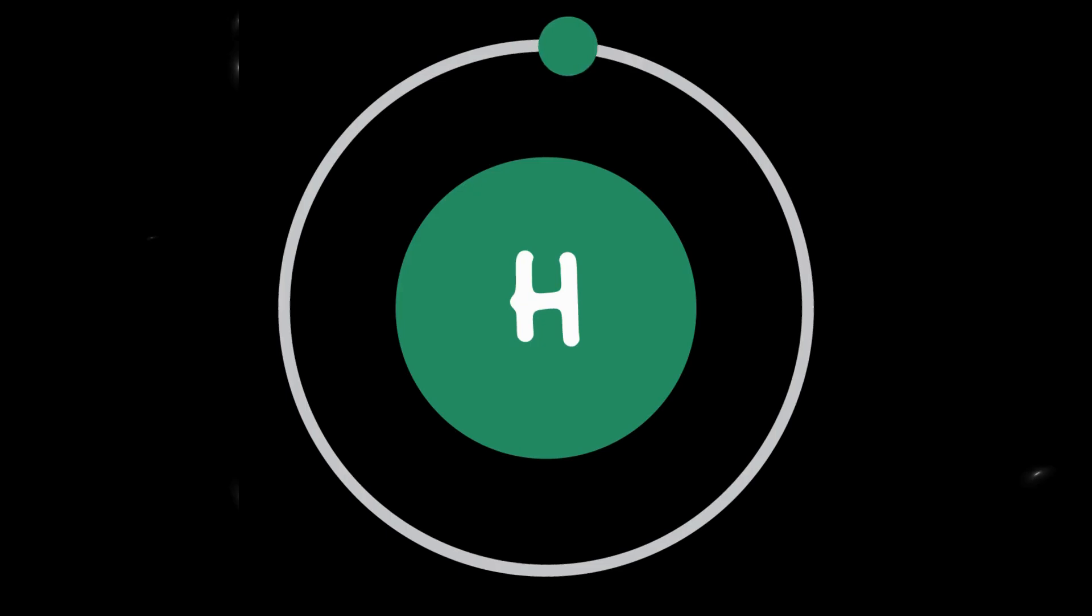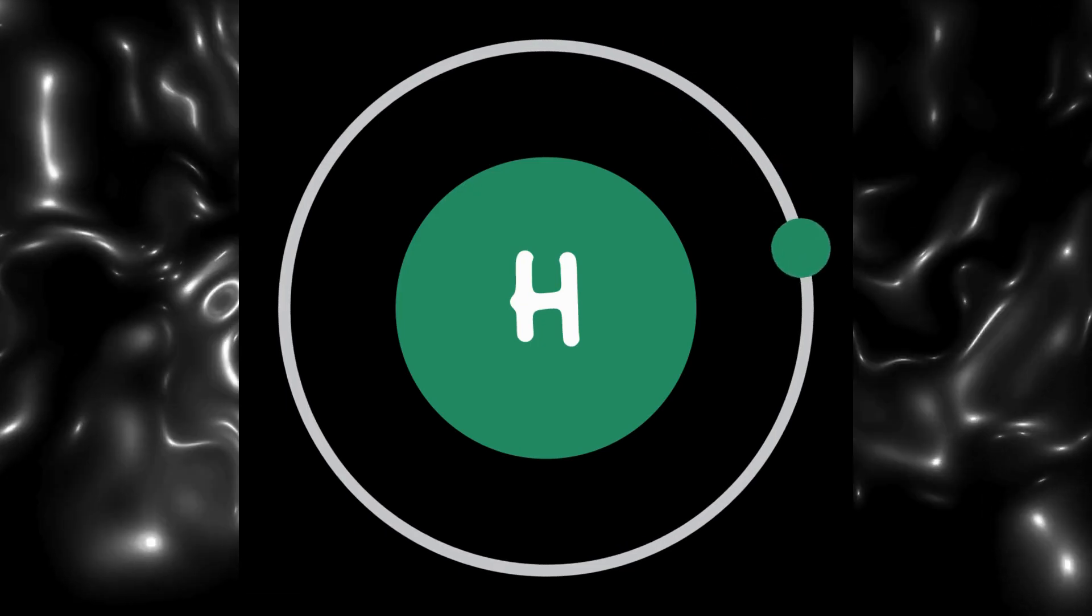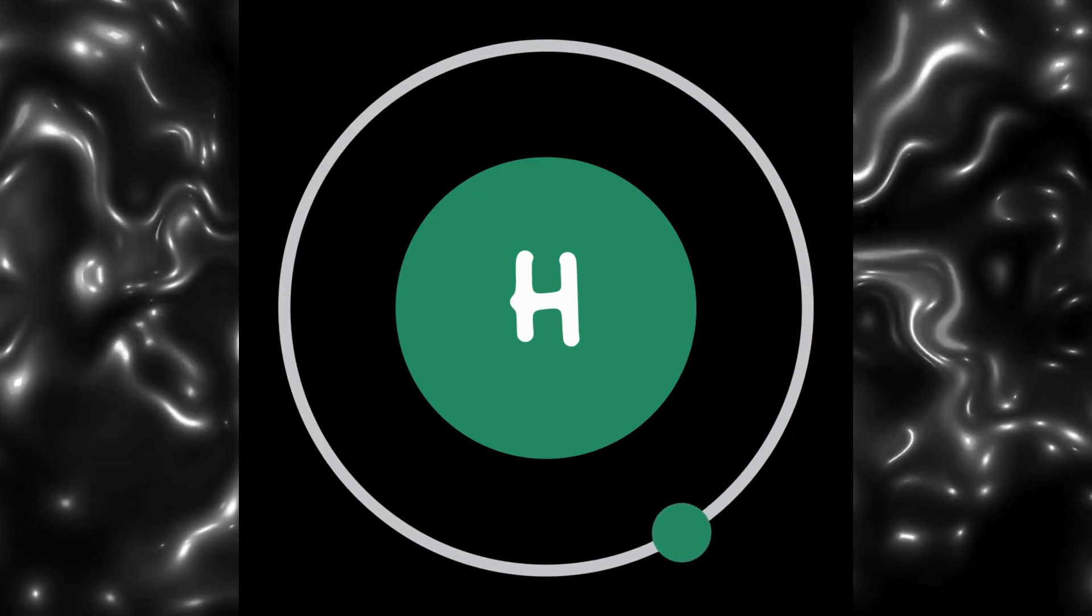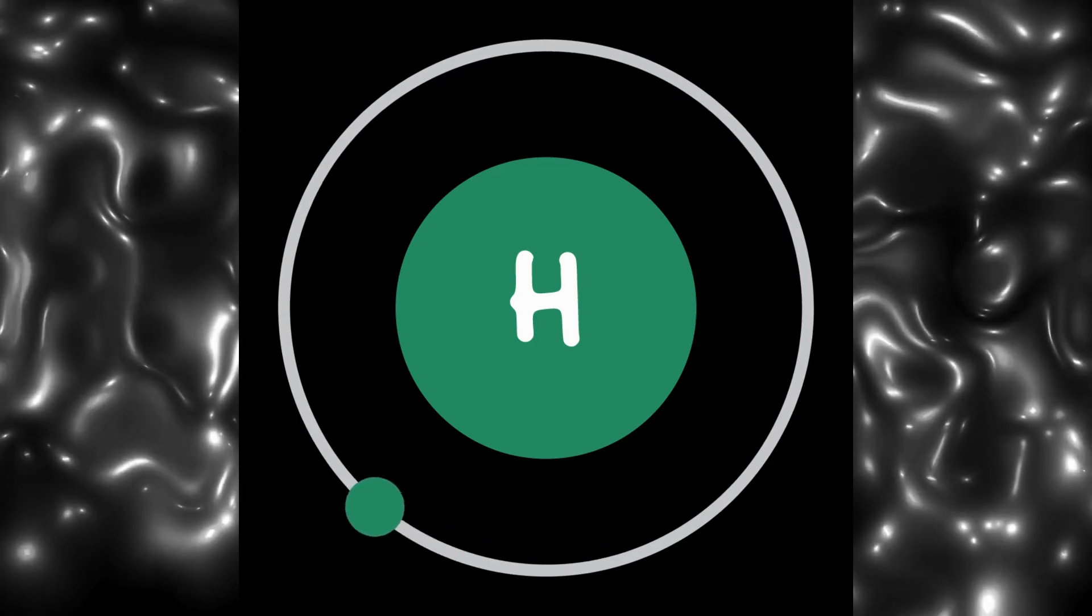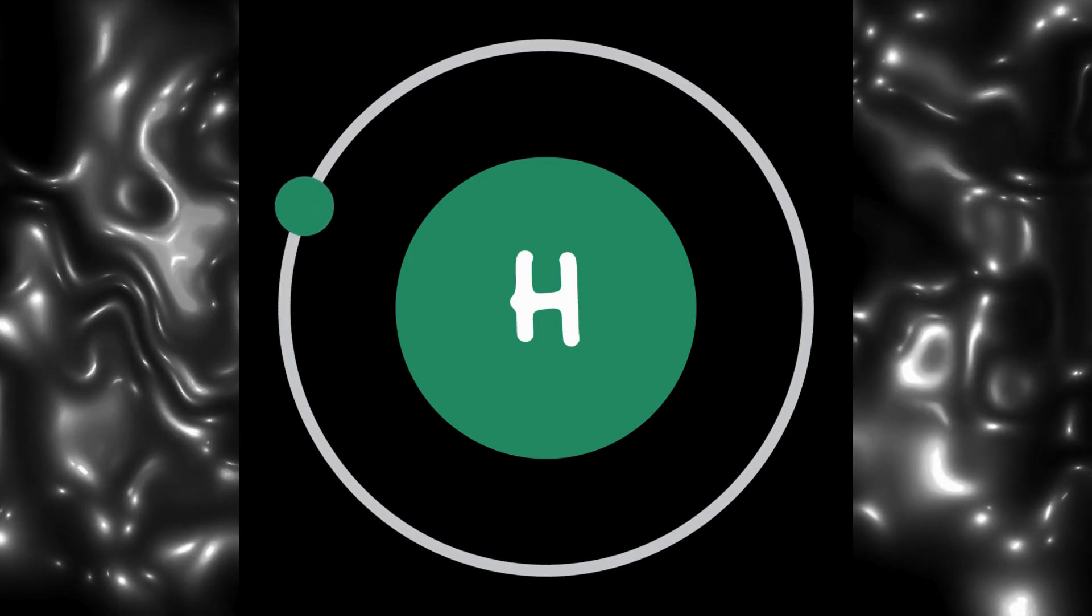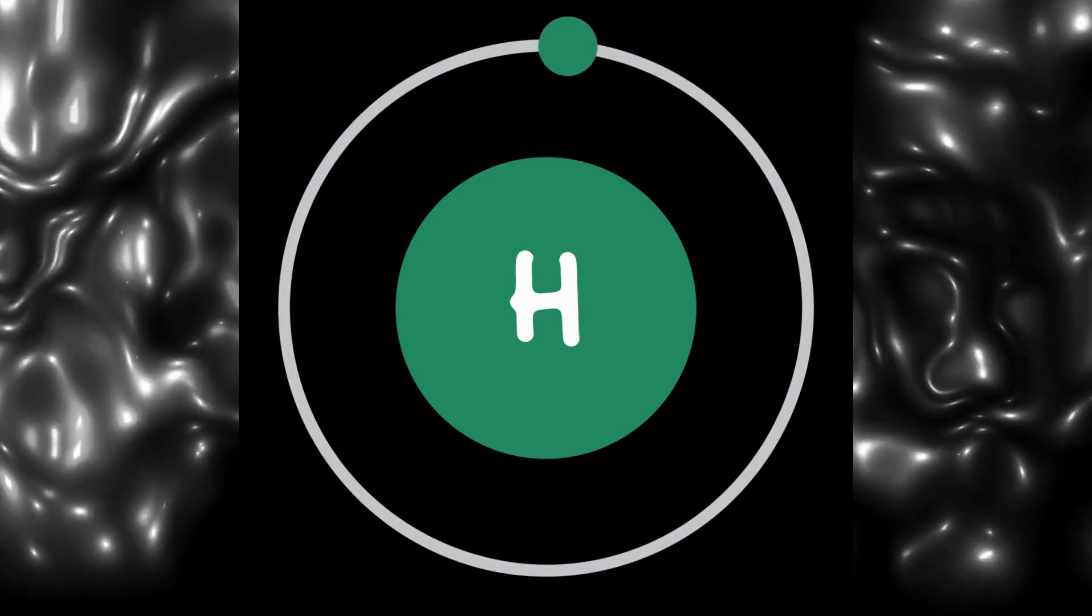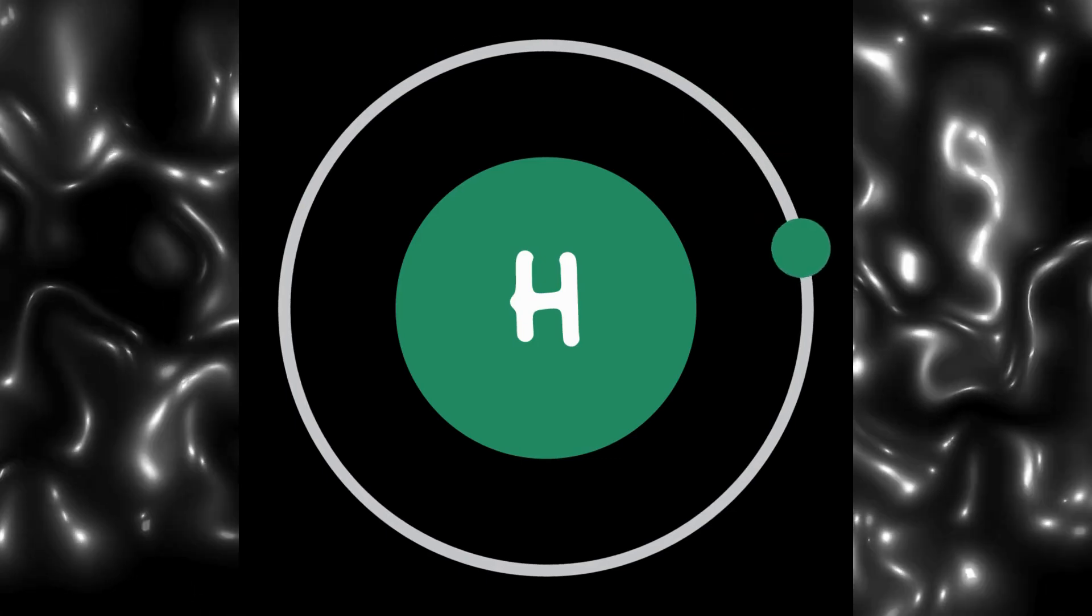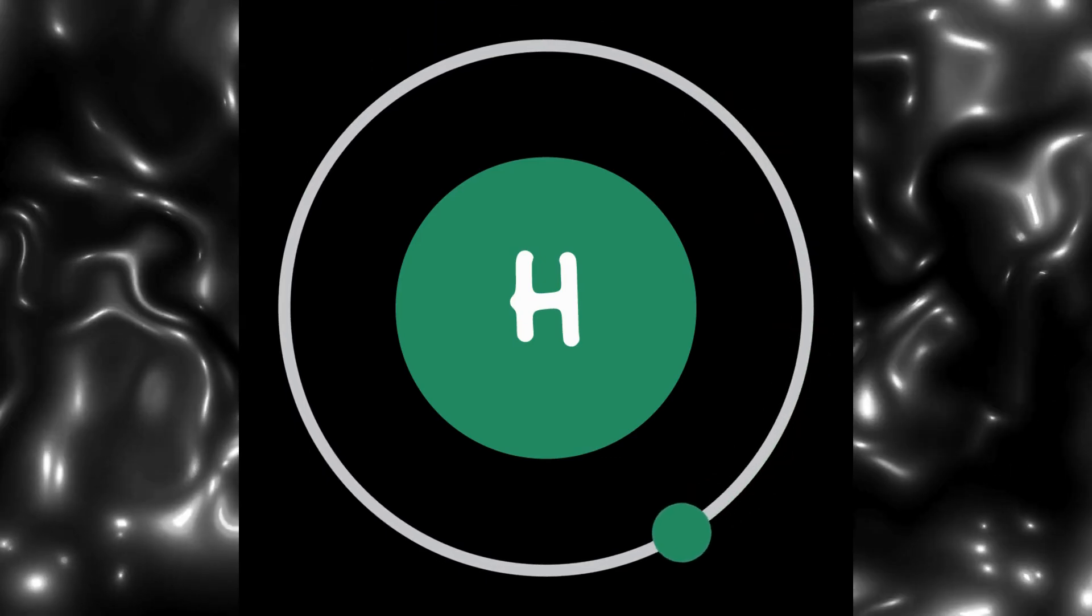A hydrogen atom is the simplest atom, consisting of just one proton in its nucleus and one electron orbiting around it. You might think, okay, one proton plus one electron should equal the mass of a hydrogen atom, right? But here's the twist. That's not the case.